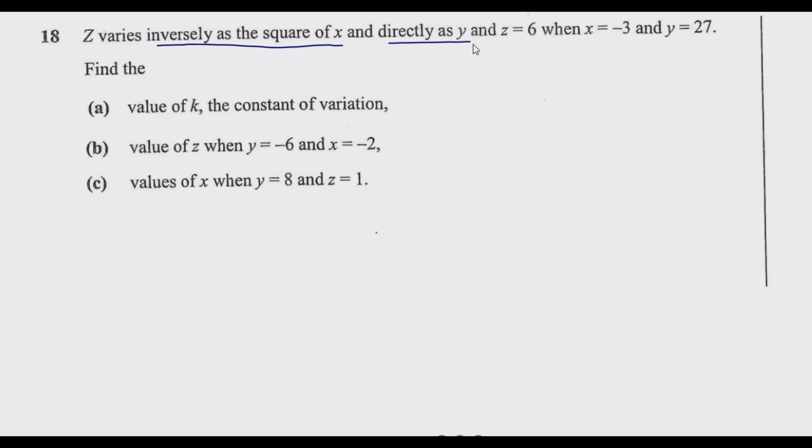Find: (a) value of k, the constant of variation; (b) value of z when y equals negative 6 and x equals negative 2; (c) values of x when y equals 8 and z equals 1.